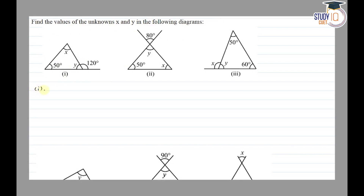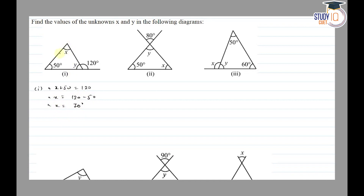In the first diagram, we will use the theorem: the exterior angle of a triangle is equal to the sum of the interior opposite angles. So 120 is equal to x plus 50. Therefore x is equal to 120 minus 50, so x is equal to 70 degrees.